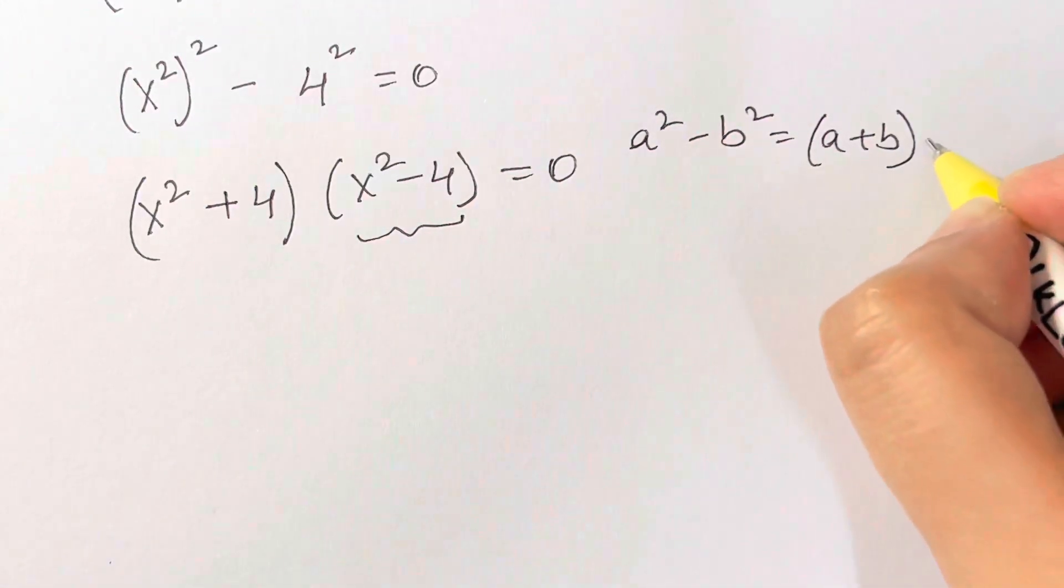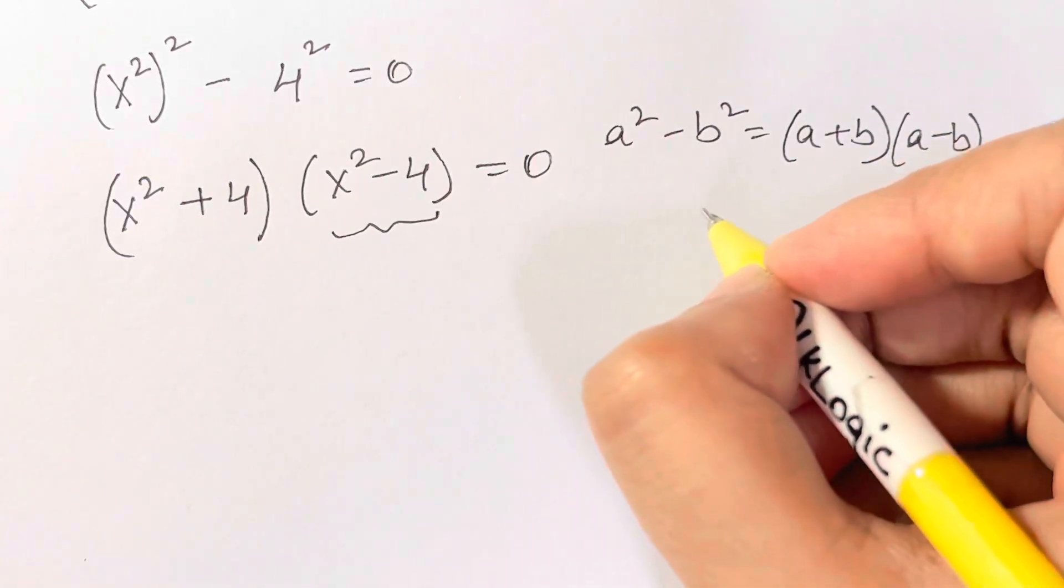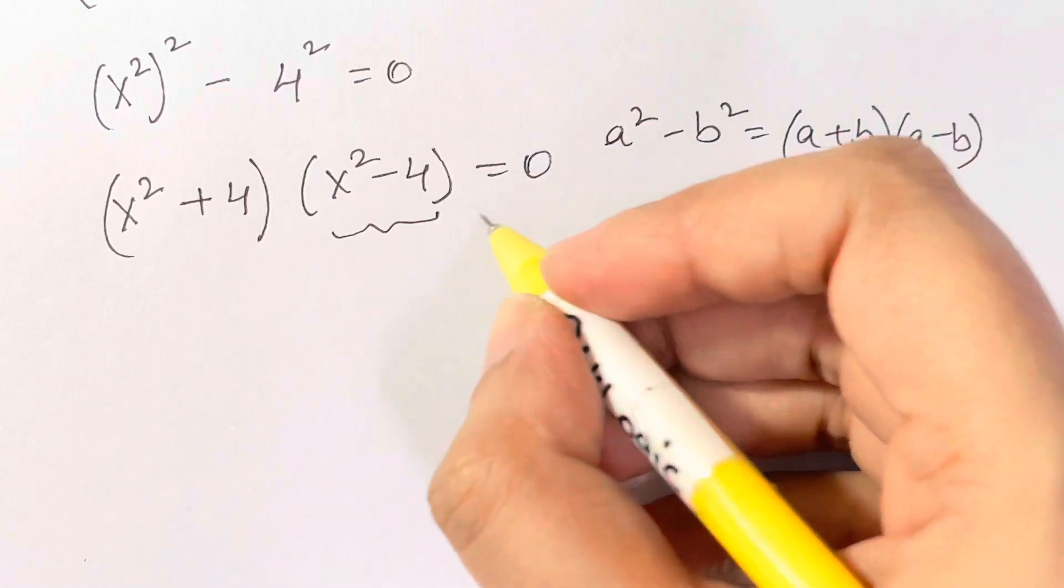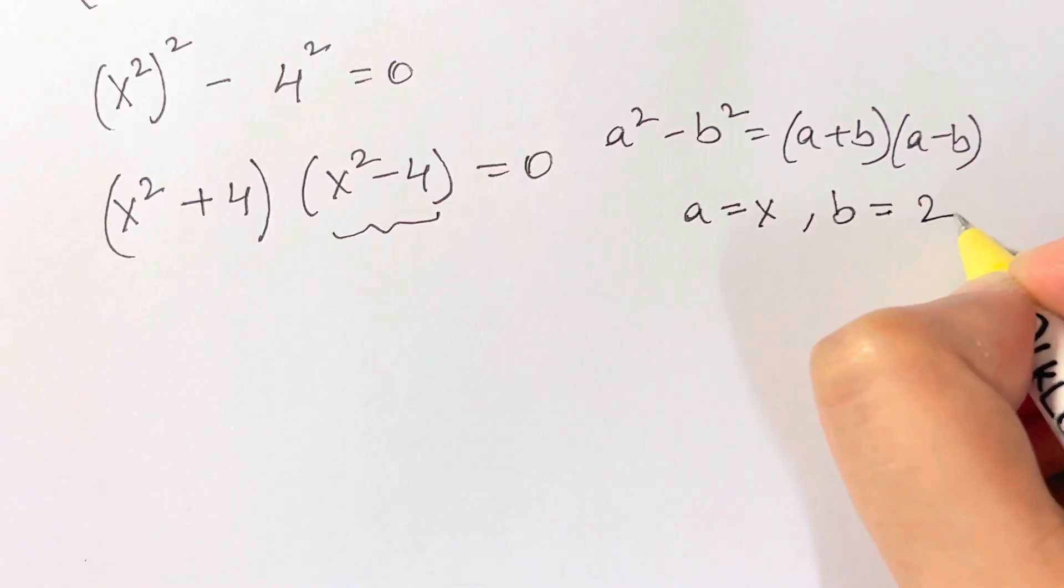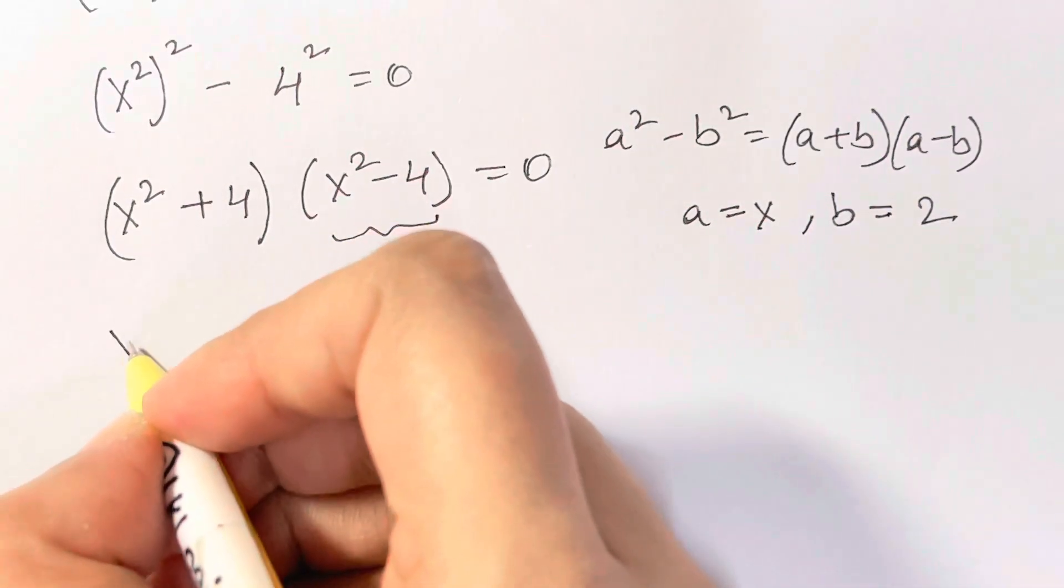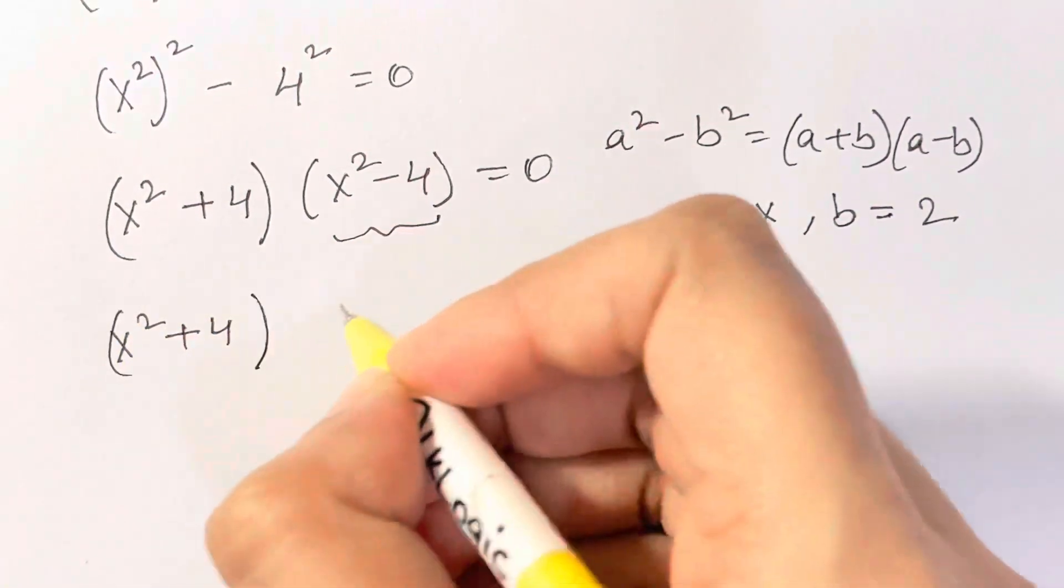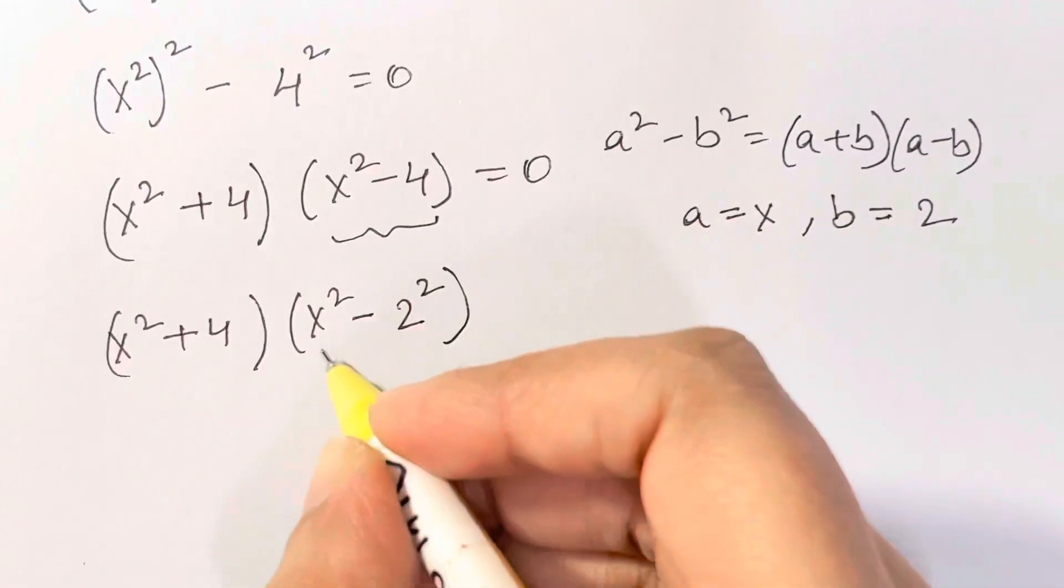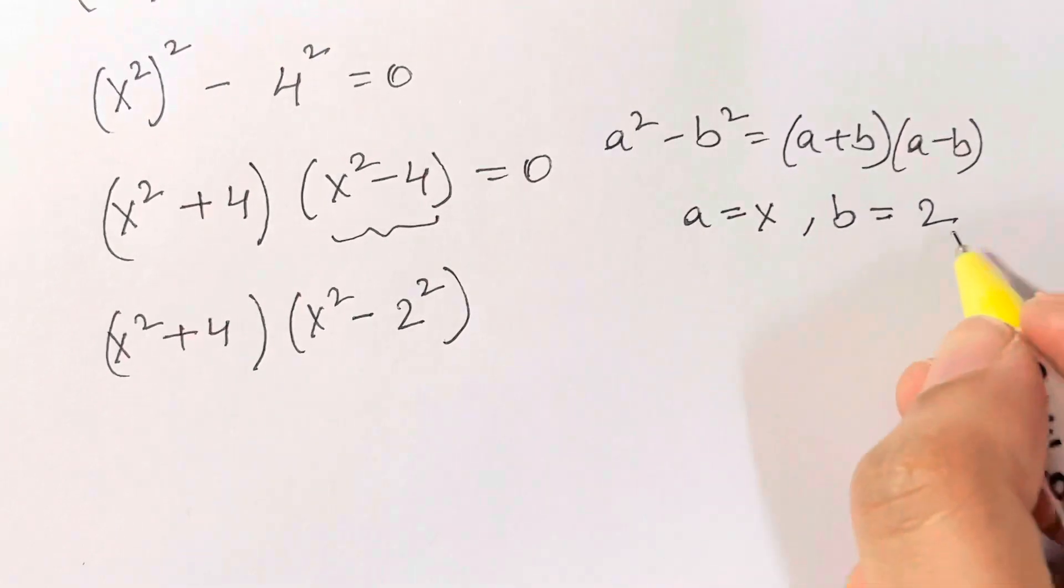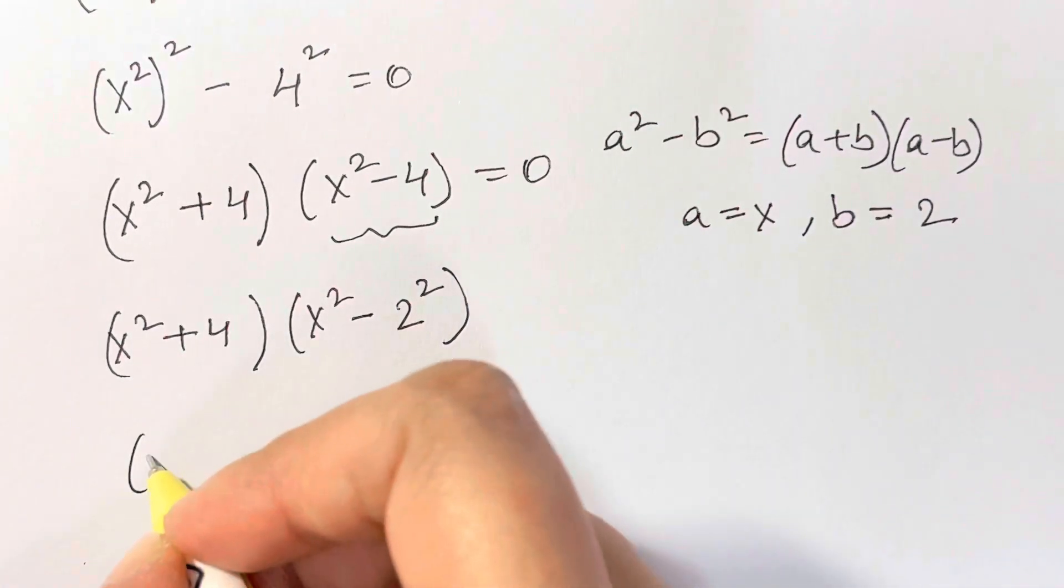We're going to use that again. What is our a here now? a is x and b is 2. See, I'm going to write that: x squared plus 4, and x squared minus 2 squared. So now we have a squared minus b squared where a is x and b is 2. Let's substitute back.